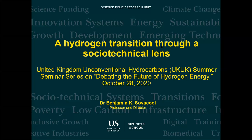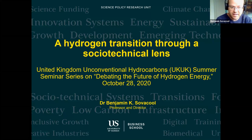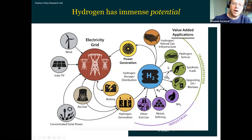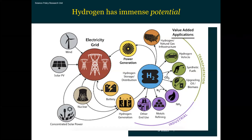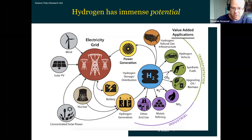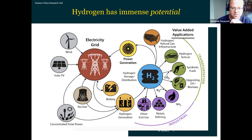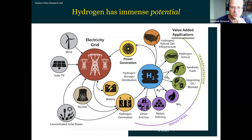Thank you very much. It's a pleasure to be here on this very interesting topic, one that has captivated energy analysts for many years. You can see why from this US Department of Energy diagram — an official federal government diagram, which means no copyright issues. Look at all the ways hydrogen connects to different energy systems: heating, mobility through vehicles, industrial processes, upgrading oil and biomass, metals refining, and even decarbonizing electricity.